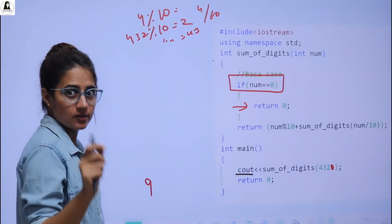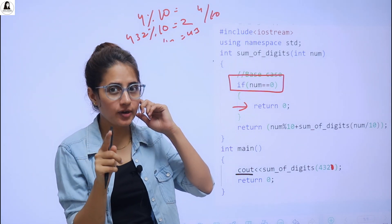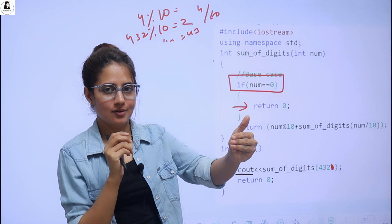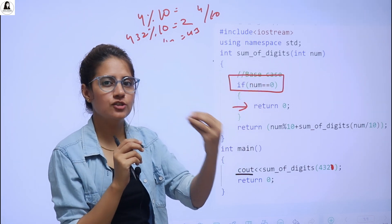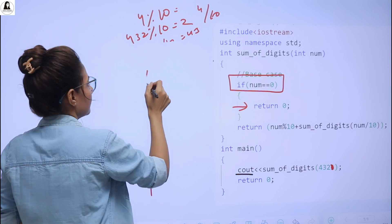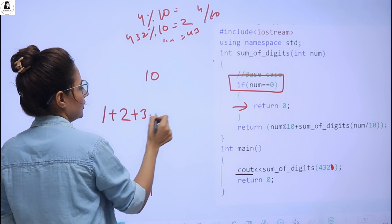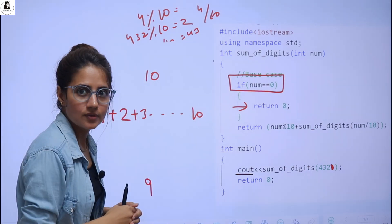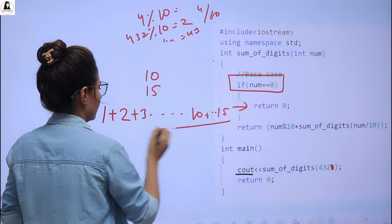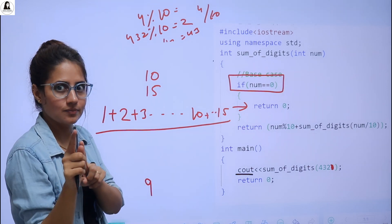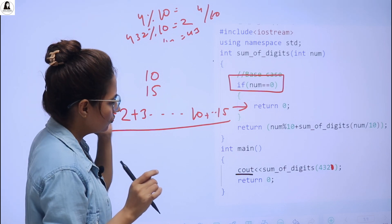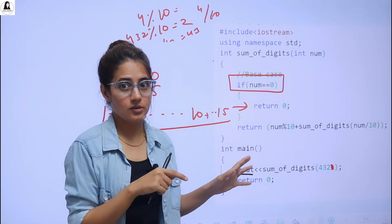If you got this, now here is one assignment for you: write a program to find the sum of N natural numbers. If the input is 10, find 1 + 2 + 3 + ... + 10. If the input is 15, find 1 + 2 + 3 + ... + 15 — using recursion. That's it for this video. In the next video we will see even more coding exercises on recursion. See you in the next video, bye bye.